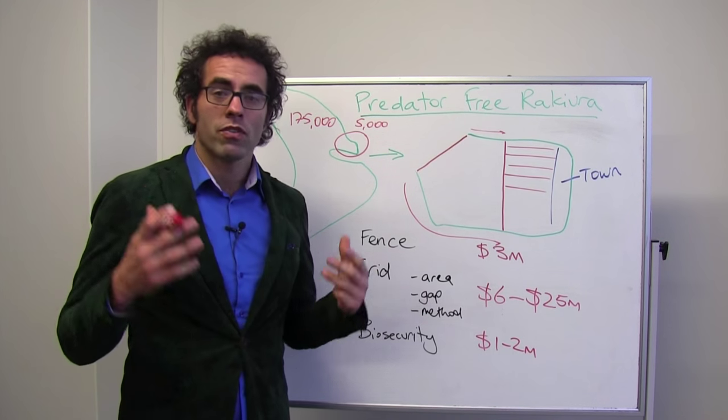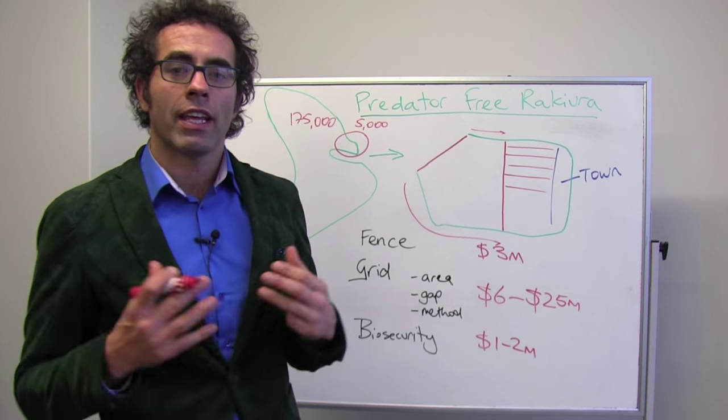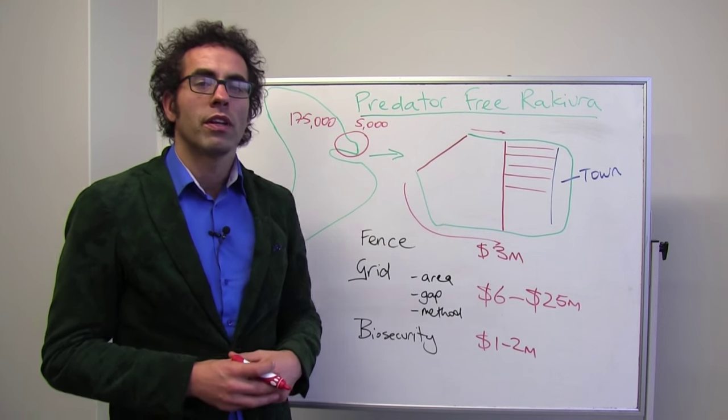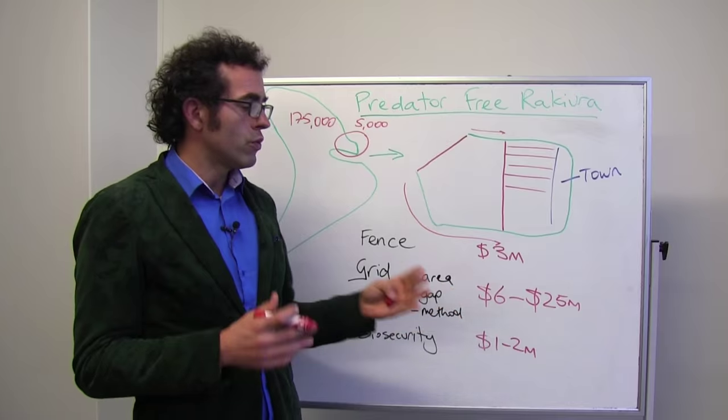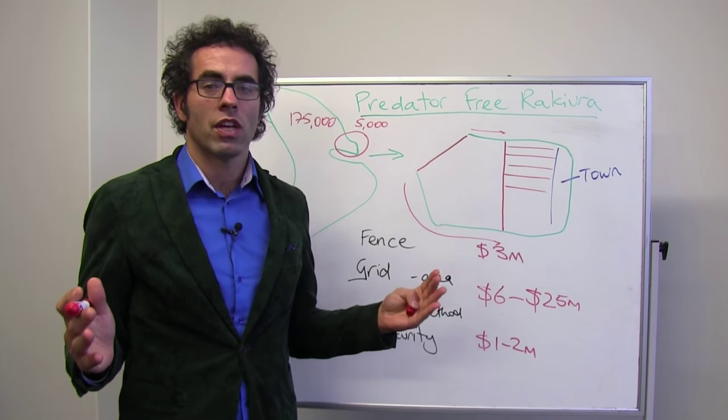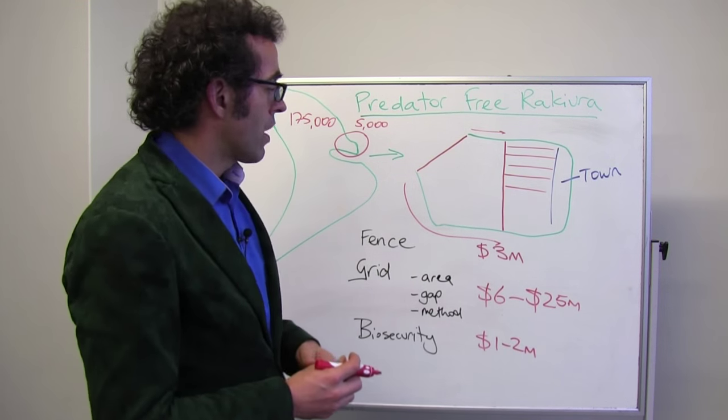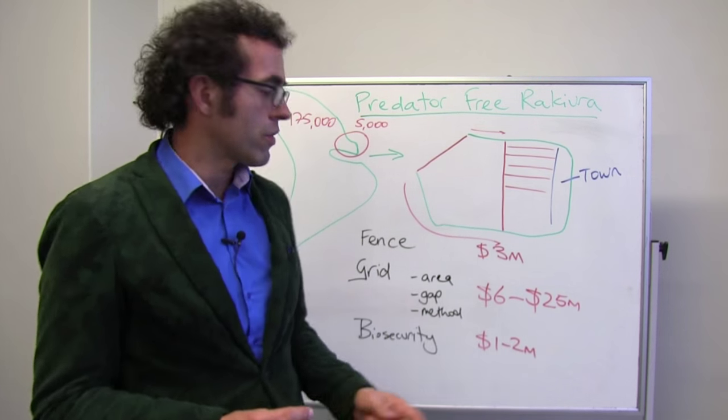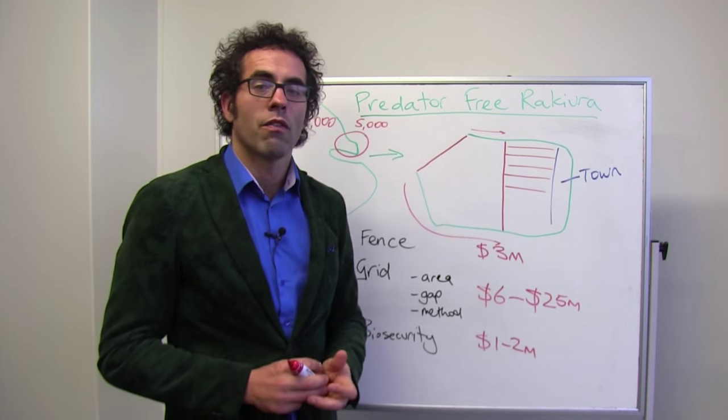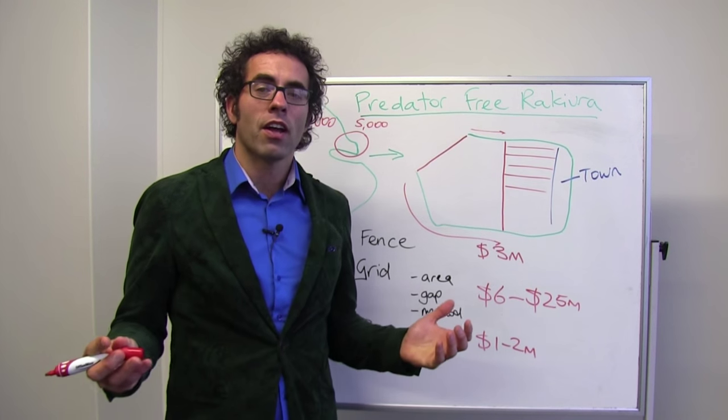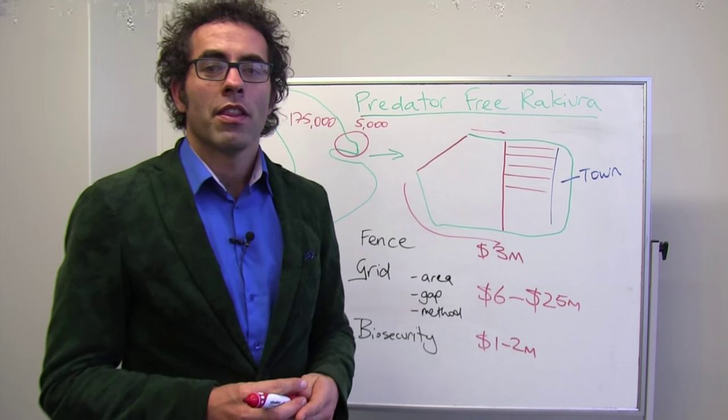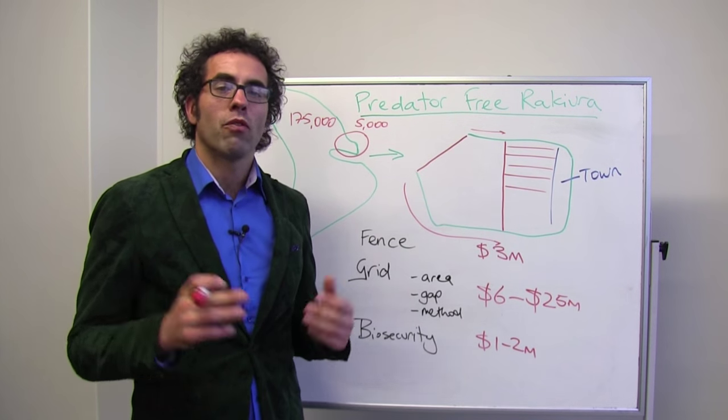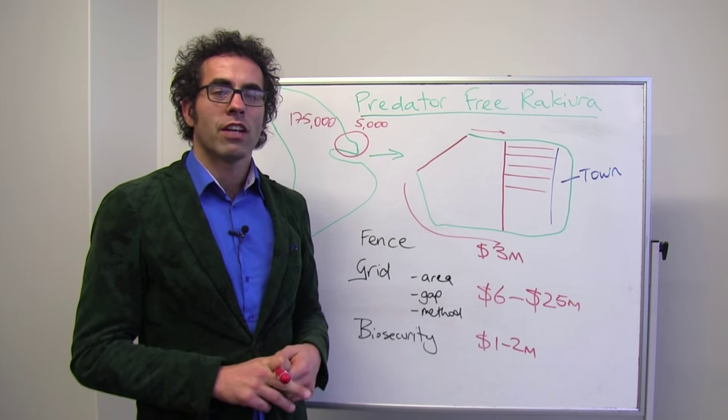So at the moment we've got some options on the table for how to get to a predator-free Rakiura, but depending on how we want to do it, there's still a huge range in the costs involved. Of course, it's going to be a lot harder to fund something at a much higher cost than at the lower end of the spectrum. But it's really exciting, this project is still moving forward, could be a really big deal for New Zealand if it actually happens.